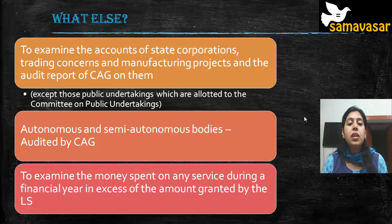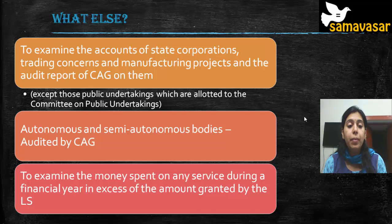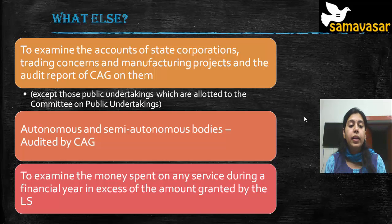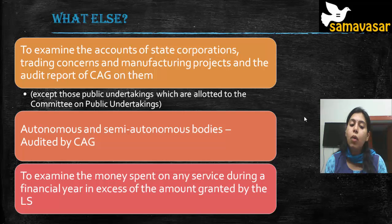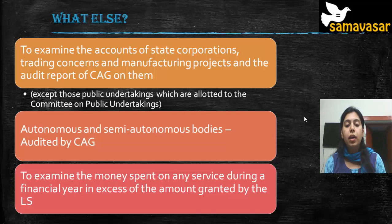The committee also examines the accounts of state corporations, trading companies, and manufacturing projects and the audit reports of the CAG on them — except those public undertakings allotted to the Committee on Public Undertakings. It also examines autonomous and semi-autonomous bodies audited by the CAG, and money spent on any service during a financial year in excess of the amount granted by Lok Sabha.